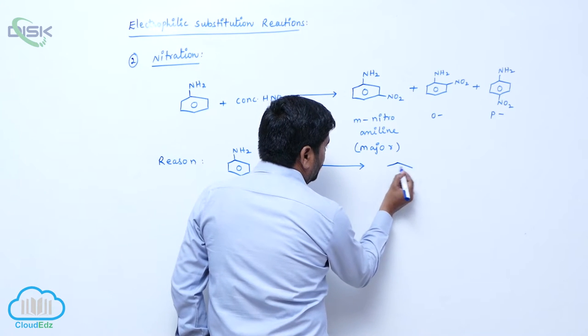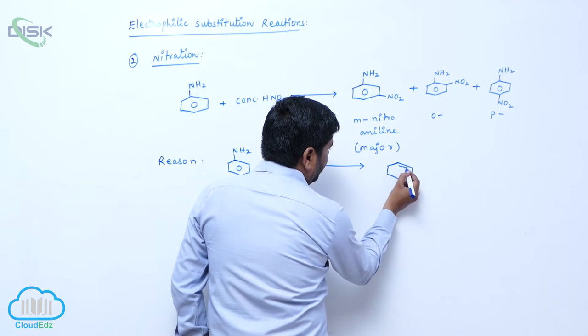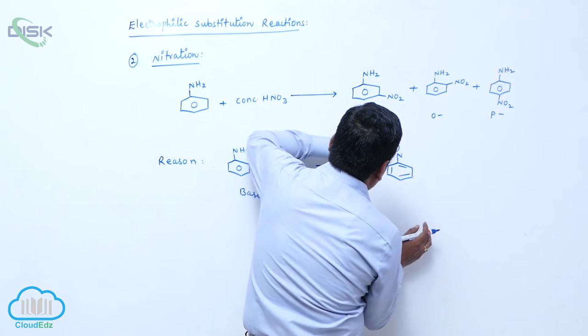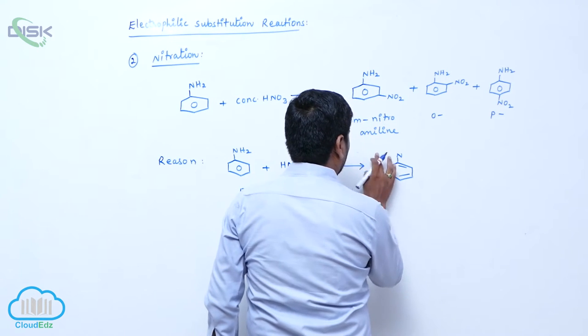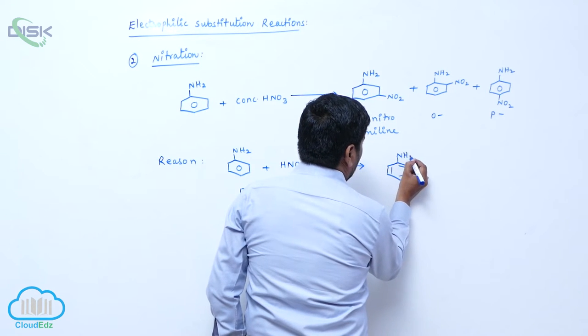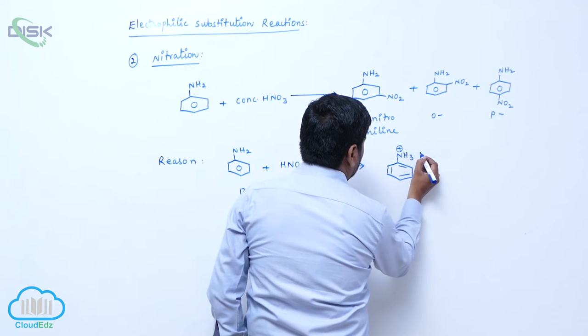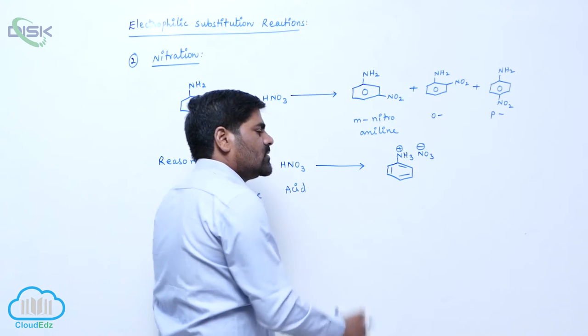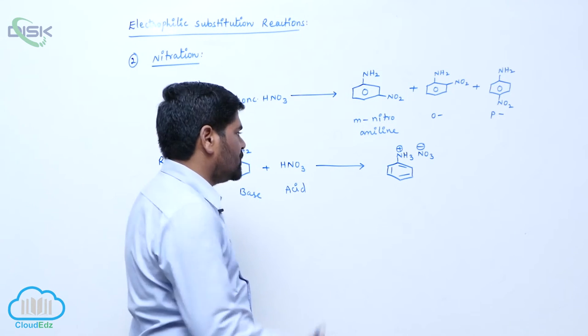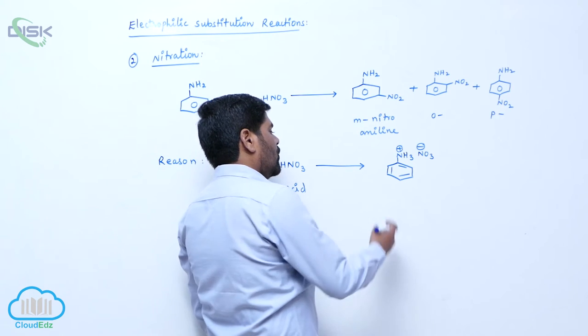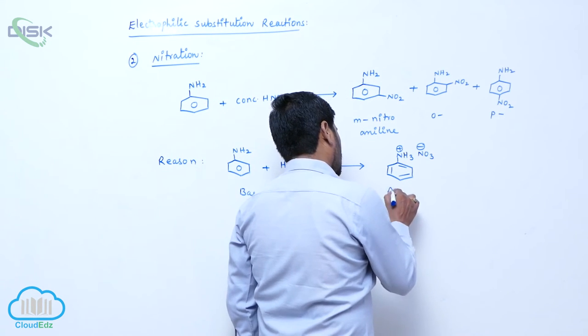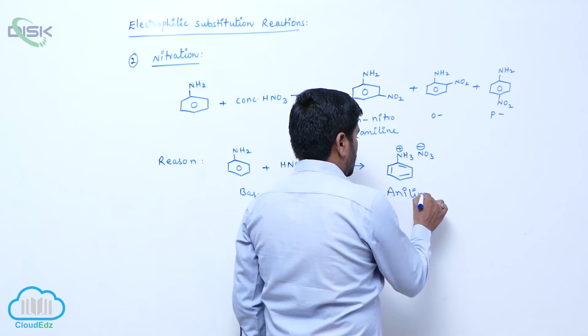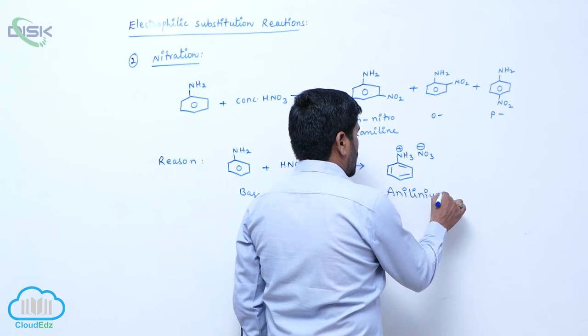So therefore, initially it forms which one? It forms NH3 plus, air carries which are positive charge, then NO3 minus. This complex is formed.